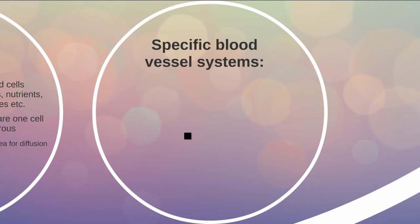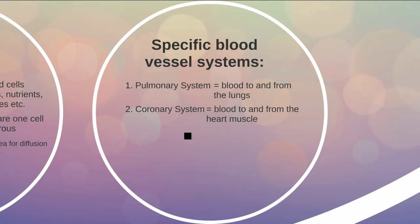There are a few specific blood vessel systems worth noting. The pulmonary system consists of the arteries and veins that deliver blood to and from the lungs — this is the connection between the circulatory and respiratory systems. The coronary system is the system of arteries and veins that deliver blood to and from the heart muscle itself, providing oxygen so the heart muscle can make ATP and continue to pump.